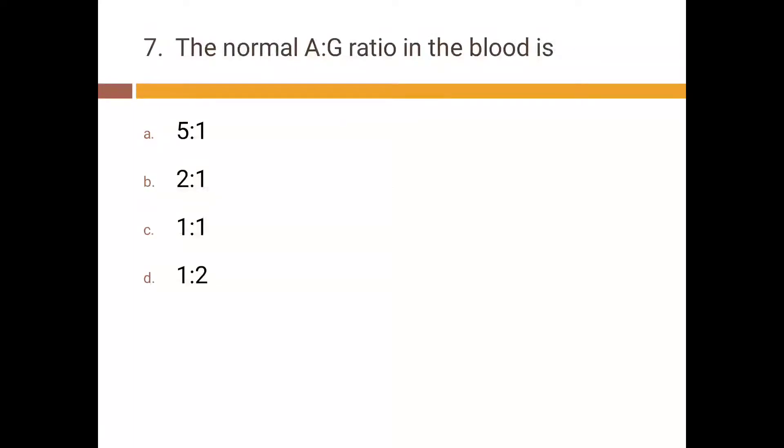The normal A/G ratio in the blood is: a) 5 to 1, b) 2 to 1, c) 1 to 1, d) 1 to 2. Correct answer is b) 2 to 1.